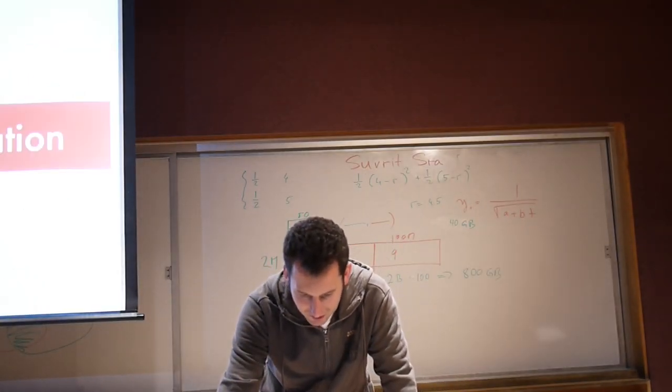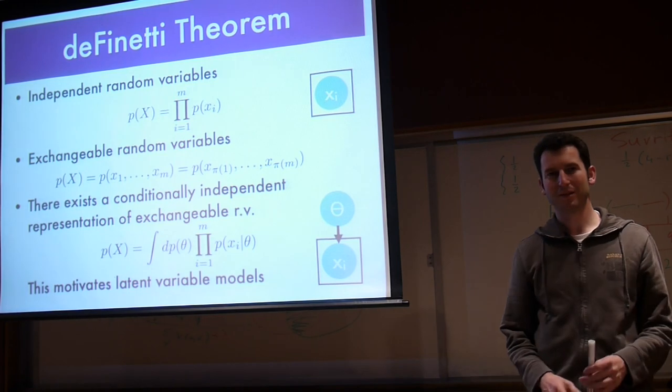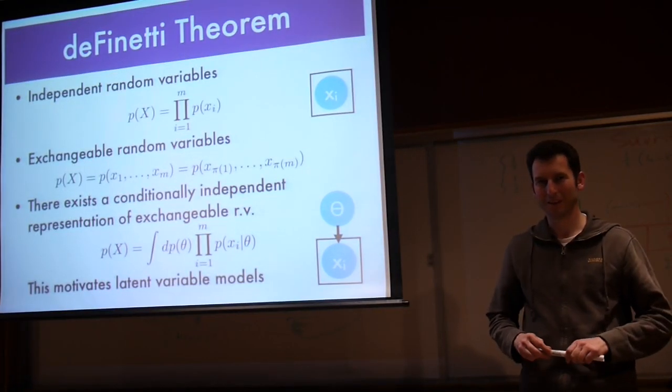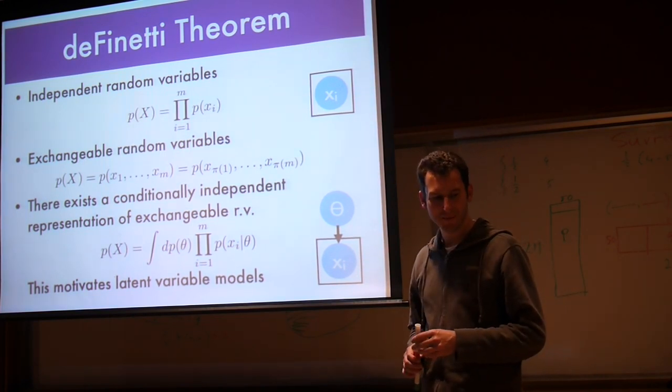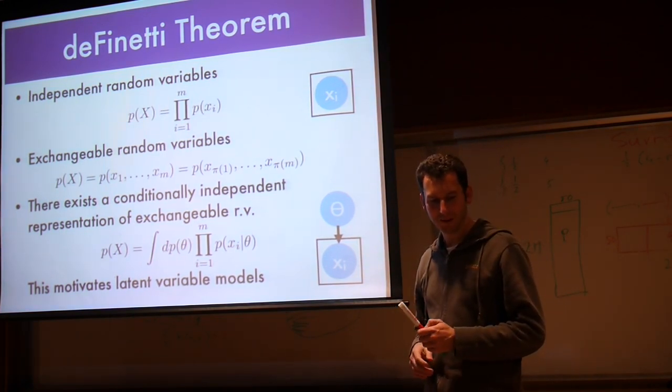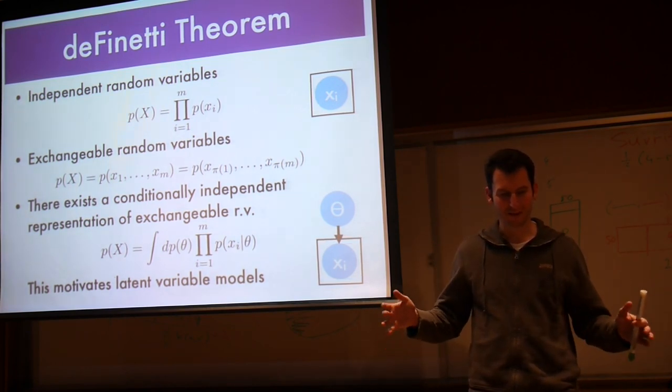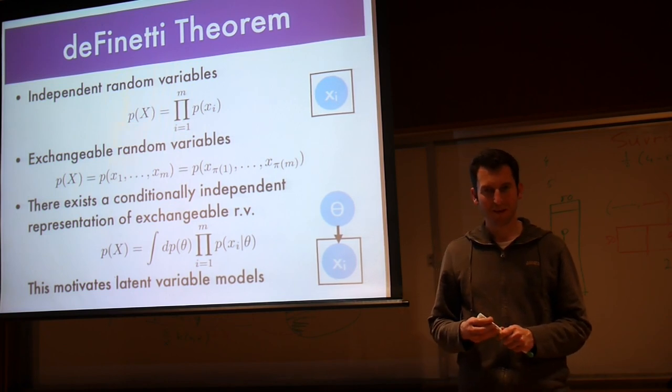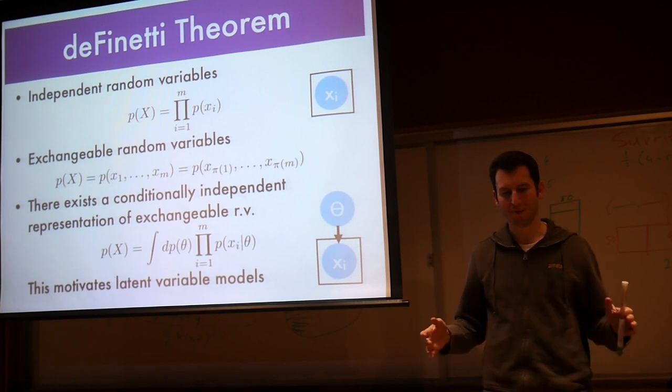Let's look a little bit at the direct motivation why we actually care about this. Who has seen de Finetti's theorem? Good, I think that's probably the guys who took Mike Jordan's class. Well, you could have independent random variables. So in other words, P of X is just the product P of X_i's.